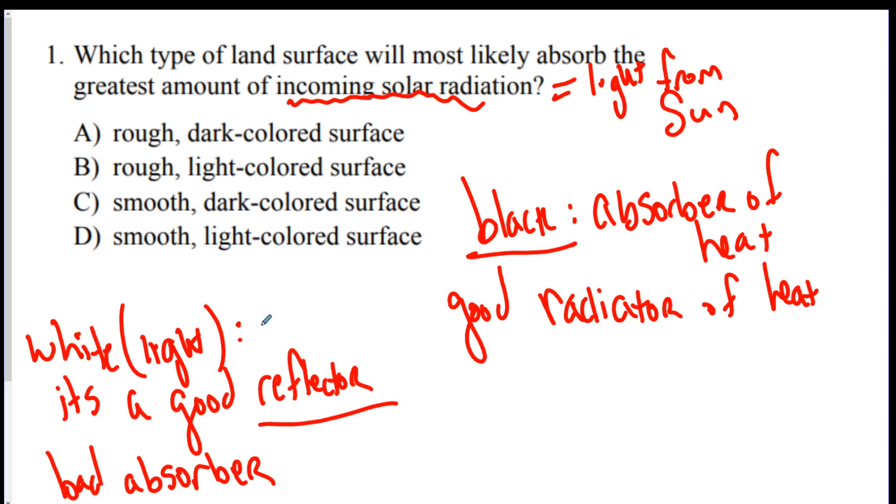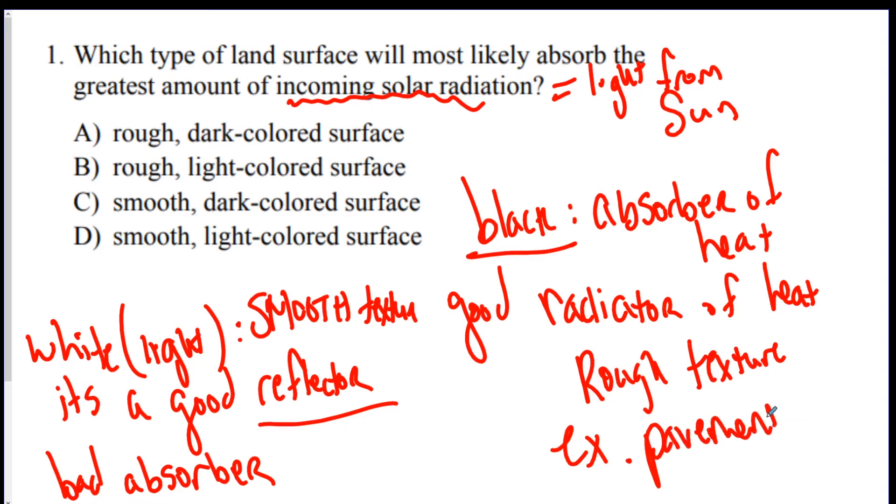Now, the opposite is good for white or light. White is a bad absorber of heat. So, in other words, we say it's a good reflector. Or you could say it's a bad absorber. Now, along with white, another good reflector or absorber is if it's smooth. A smooth texture. Or for black, another good absorber or good radiator is a rough texture. So, these are opposites. An example of something that's dark and rough would be like pavement. That gets really hot. Or like sand. Another thing that's like light and smooth over here. An example is like ice. So, the answer to this. Which type of surface will absorb the greatest amount? You want rough and dark color. A.